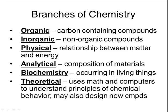And then there's also theoretical chemistry, and this is the kind of chemistry that uses math programs, computer programs to understand the principles of chemical behavior. There's often a lot of modeling or predicting going on in theoretical chemistry. And sometimes theoretical chemistry can also be used to design new compounds or to design compounds that have certain properties.